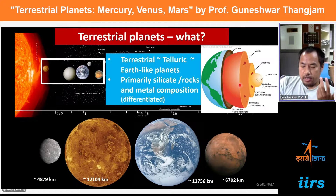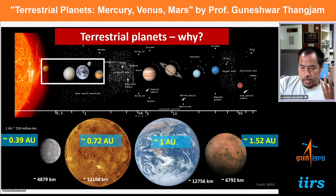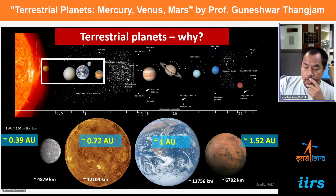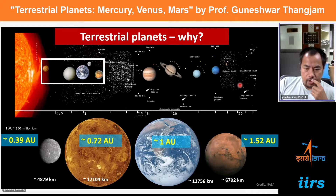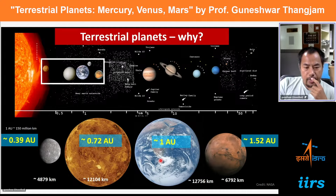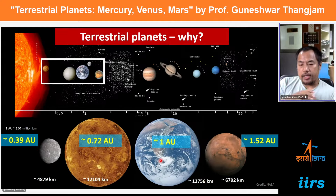When we say these are terrestrial planets, why should we care about them? Terrestrial planets play a very important role. Today's talk focuses mainly on Mercury, Venus, and Mars. Starting with the astronomical unit distances — one AU is approximately 150 million kilometers — if we understand these numbers in terms of their physics, chemistry, and geology, then we will be able to recognize their importance.